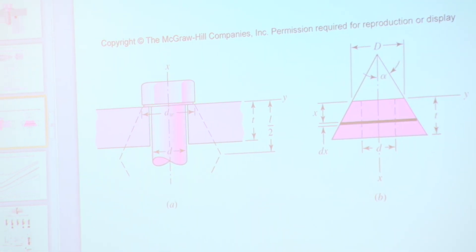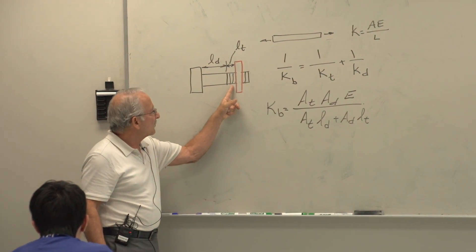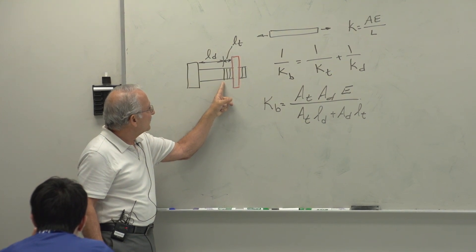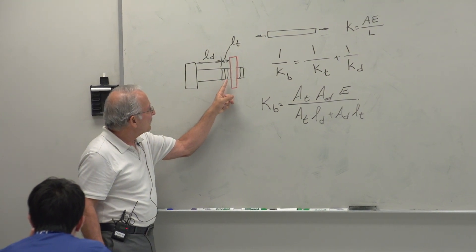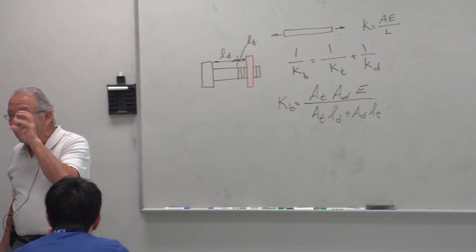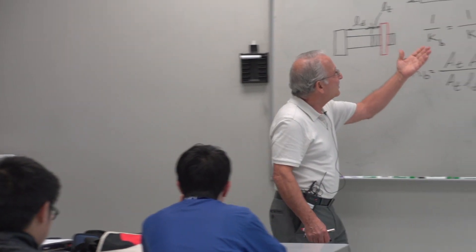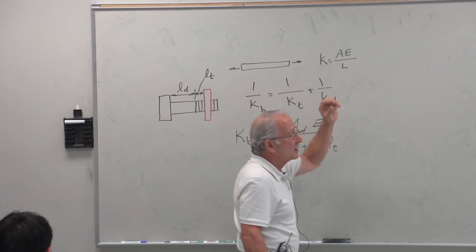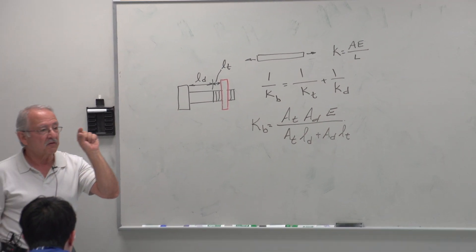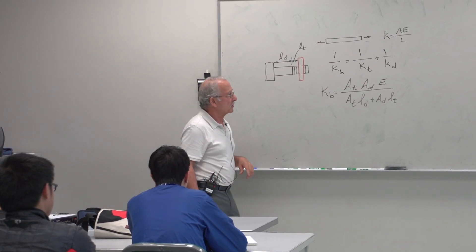In the bolt, the area in tension changes from the threaded part to the unthreaded part, but it remains constant throughout each length — AD throughout LD, and AT throughout LT. That area, for the member, is not constant. So we can't use that equation as-is. We can use it in differential form to find a differential deflection, and then find the stiffness from that.